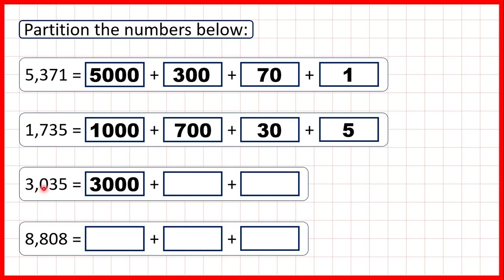They just give the other digits in the number the right place value. So because we have a 0 in our hundreds, we know that this 3 represents 3,000 — this 3 is in our thousands. Because we don't need to partition zeros, we can move on to this 3 that's in our tens, so that stands for 30, and then this 5 in our ones just stands for 5.